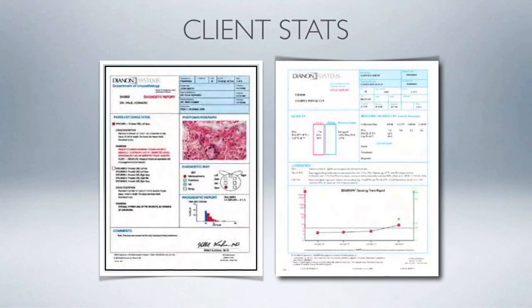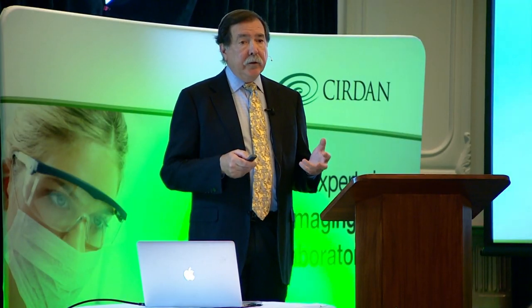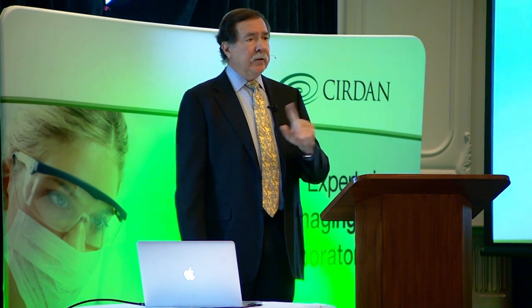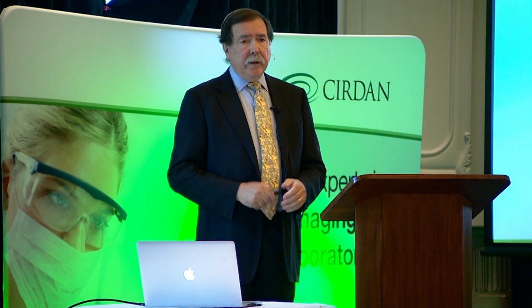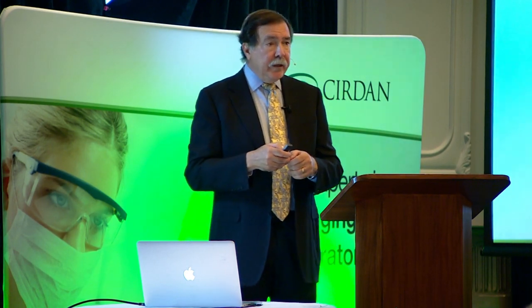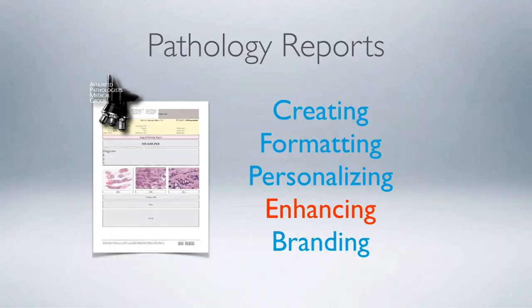Other personalization options include embedding lab statistics like a PSA score into the anatomic pathology report. We've also added our name, phone number, and email address at the end of the report. That number goes directly to the office — no phone tree — and if I'm not in, it rotates to my cell phone. I get about one call a month, usually a billing question, but it creates direct connectivity that's important for patients. We haven't gone as far as social media yet, but maybe in four or five years we'll start adding social media buttons at the bottom of reports.